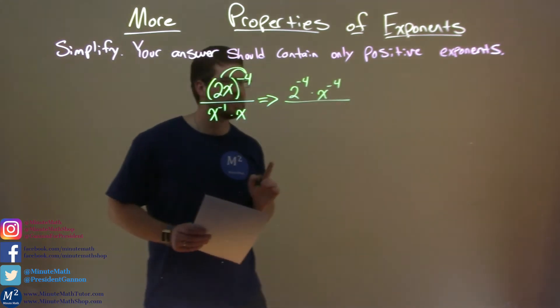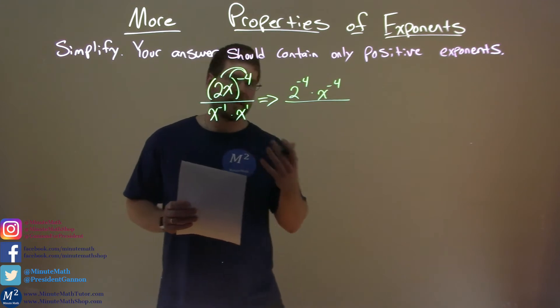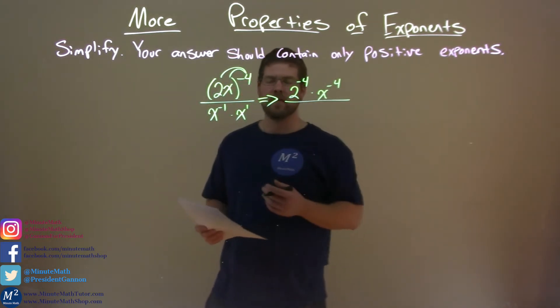Now the denominator. This one's actually kind of tricky. We have x to the first power here, but they didn't give us the one from the beginning, but we know it's there.